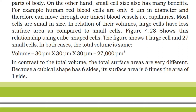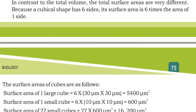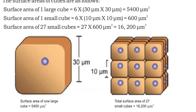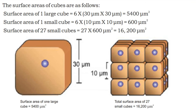In contrast to the total volume, the total surface areas are very different. Because a cube shape has six sides, its surface area is six times the area of one side. The surface area of 1 large cube = 6 × (30 μm × 30 μm) = 54,000 μm².